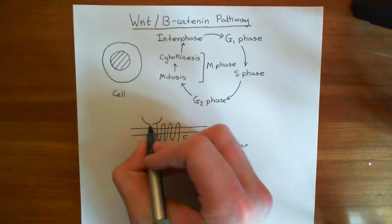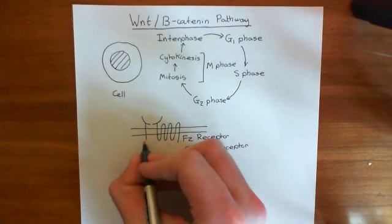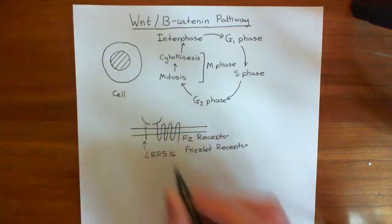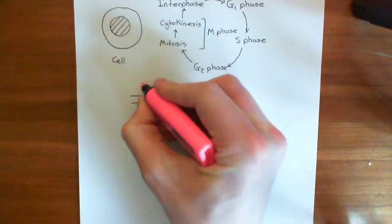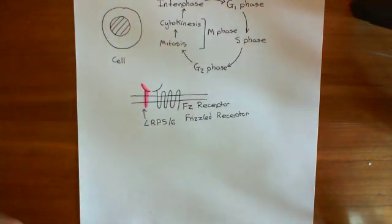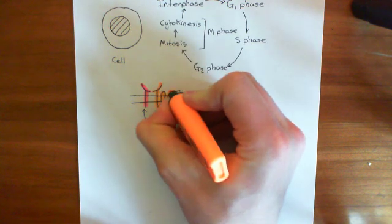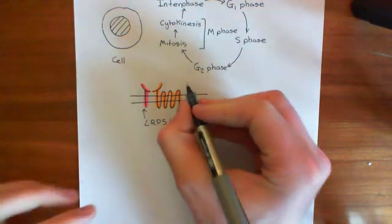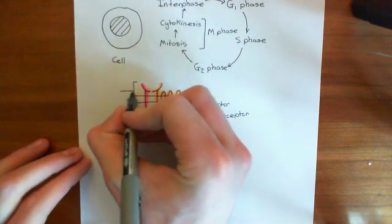The Wnt receptor, half of it consists of this frizzled receptor, and the other half consists of a protein that only spans the membrane once. This protein is known as LRP, and it can either be LRP5 or LRP6. These two together, the LRP5 or LRP6 with its one membrane-spanning alpha helix and the frizzled receptor with seven membrane-spanning alpha helices, dimerize together to make the overall Wnt receptor. This entire thing is the Wnt receptor.